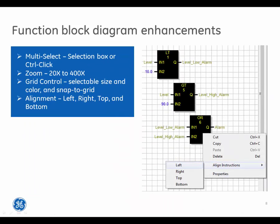Function block diagram enhancements include multi-select using a selection box or control-click, zoom from 20 times to 400 times, grid control with selectable size and color and snap to grid, and left, right, top, and bottom alignment.